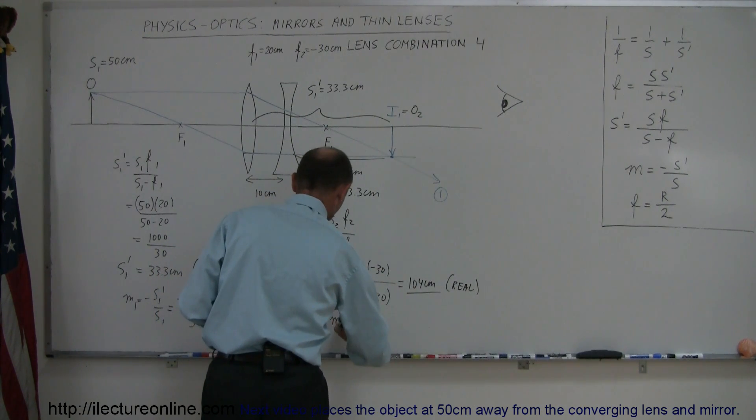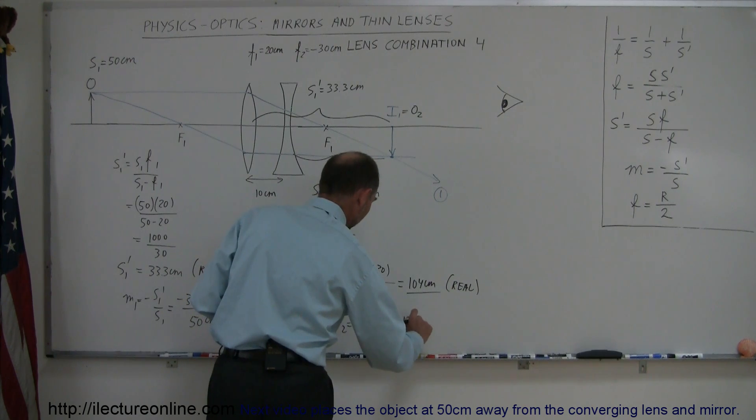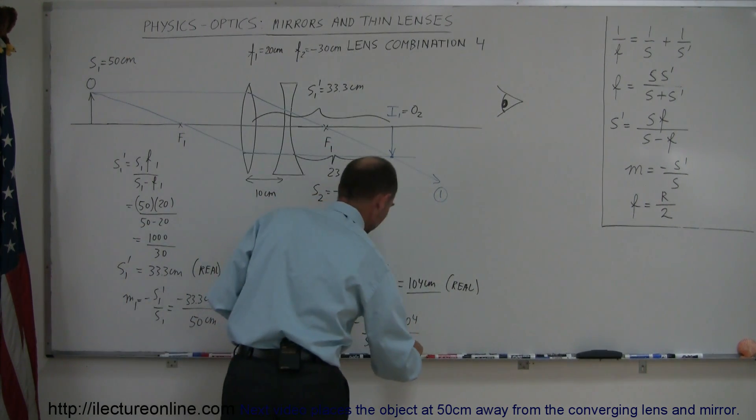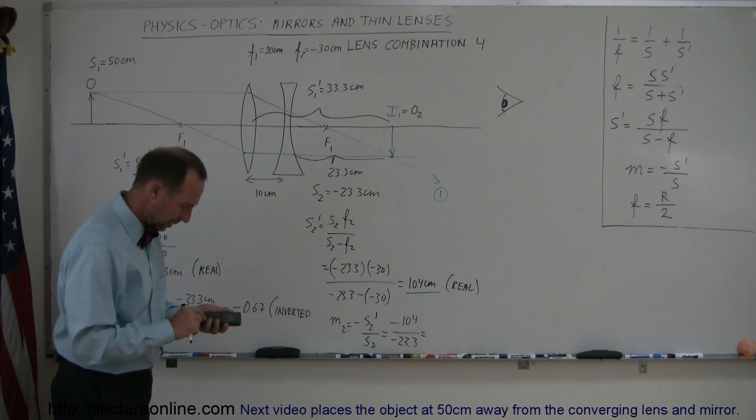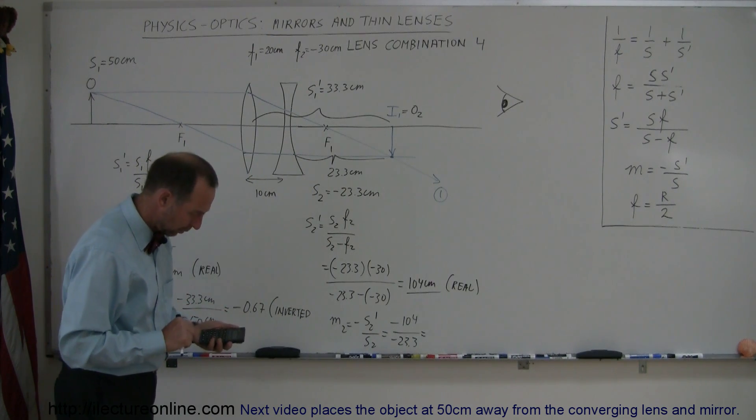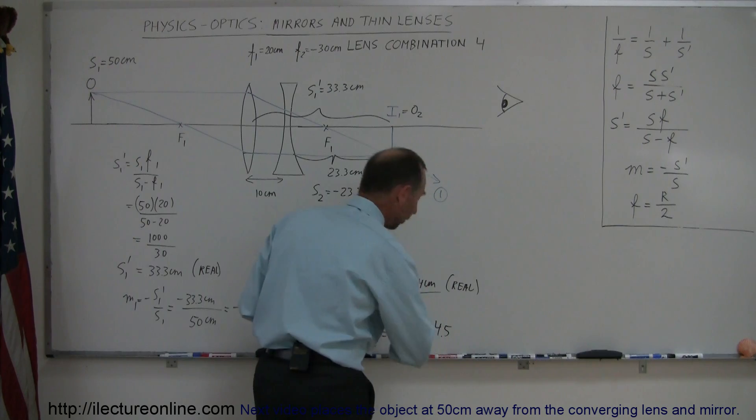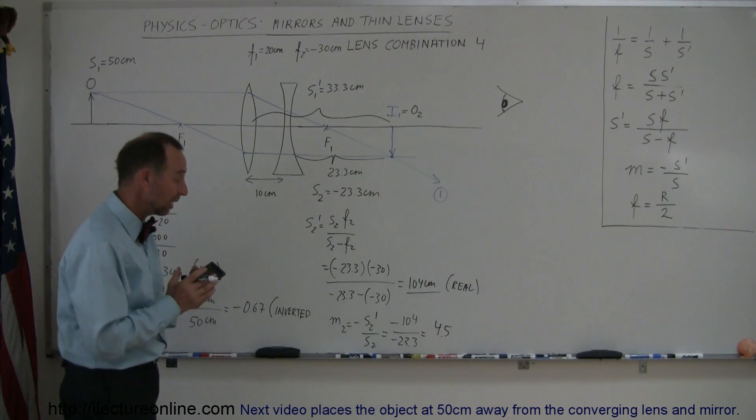The magnification of the second lens M2 equals minus S2 prime over S2. So it's minus 104 divided by S2 which was negative 23.3, and we get plus 4.5.